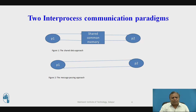This is the diagram of inter-process communication paradigms. P1 and P2 are two processes communicating with each other through a common shared memory, sending and receiving messages through it. Figure one is the shared data approach and figure two is the message passing approach. Here P1 and P2 are two isolated machines — they do not share any memory. P1 sends a message to P2, and P2 sends an acknowledgement back to P1. This kind of communication is called the message passing approach.